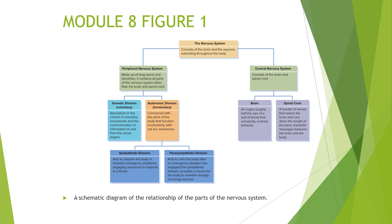Figure one in Module 8 is on page 64 in your textbook. It breaks down how the nervous systems are organized. At the top you have the nervous system, consisting of the brain and neurons extending throughout the body. You have two types: the central nervous system and the peripheral nervous system. The central nervous system consists of the brain and spinal cord. The brain is an organ roughly half the size of a loaf of bread, constantly controlling the various behaviors of your body. The spinal cord is a bundle of nerves that leaves the brain and runs down the length of your back, transmitting messages between the brain and the rest of the body.